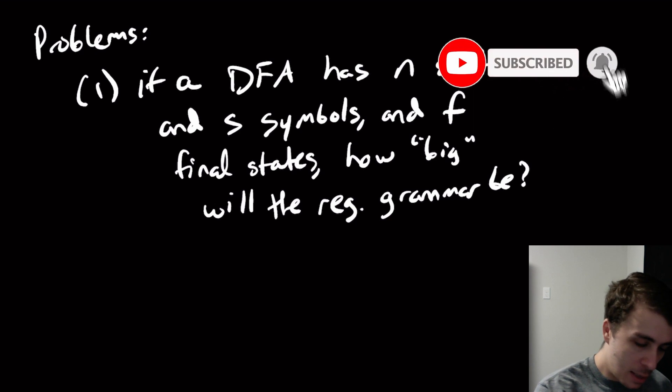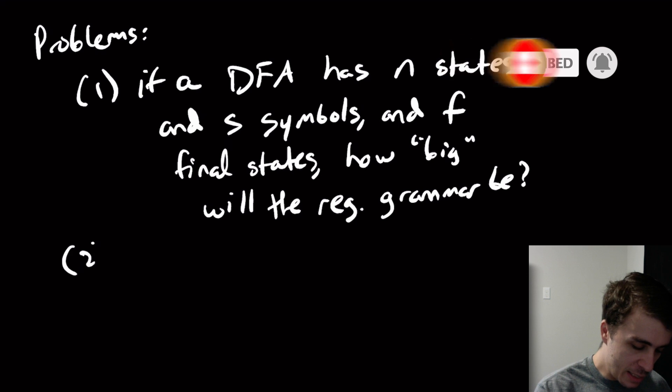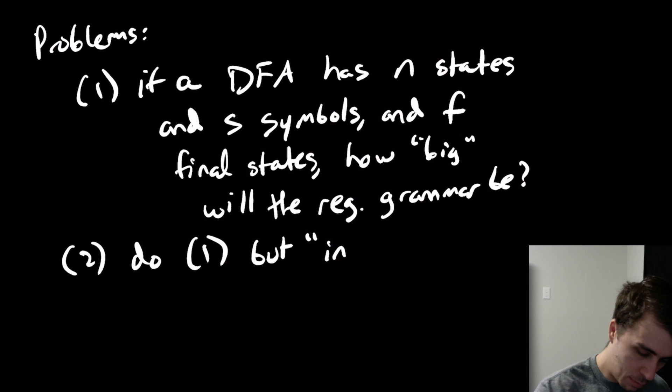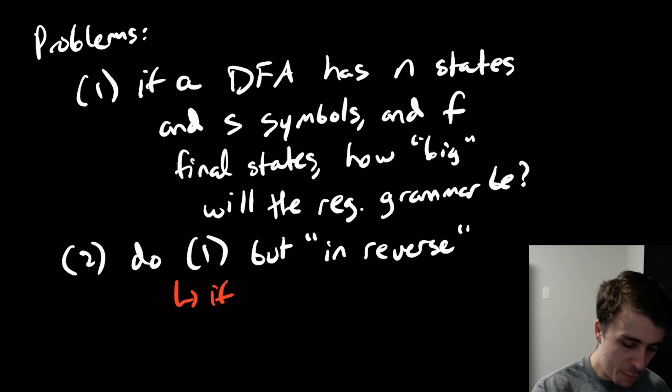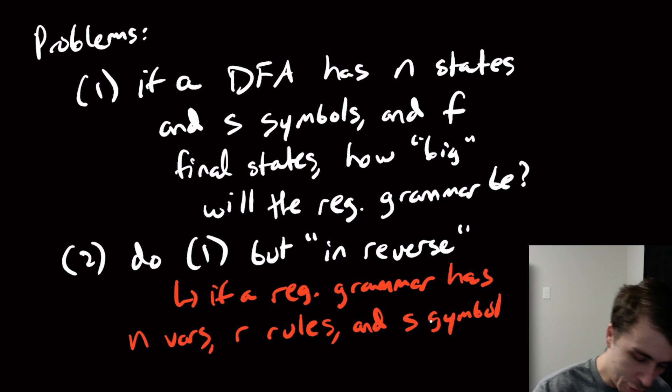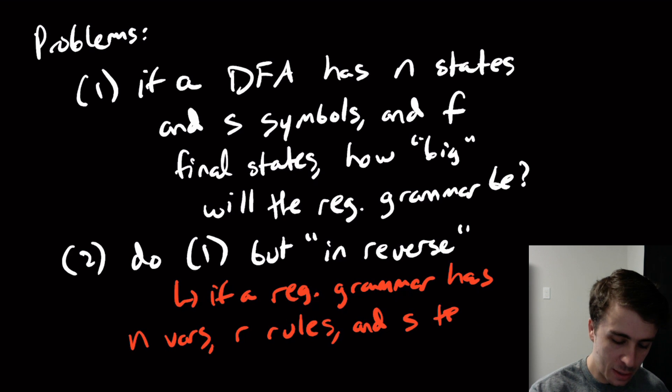Another thing that I would want to do is do number one but in reverse. What do I mean by that? I mean that if a regular grammar has let's say n variables and r rules, that's how many rules it has, and s symbols—actually I shouldn't call it symbols because the terminology is different, let's call them terminals.